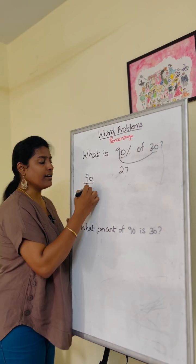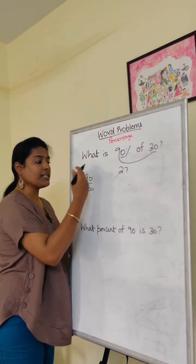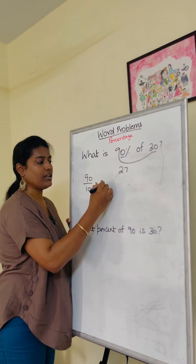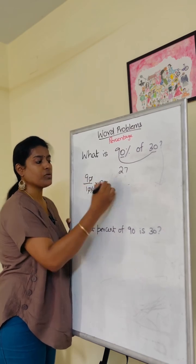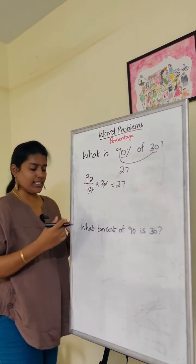90 by 100 times 30. Cancel the zeros, so 9 times 3 is 27. This is easy.